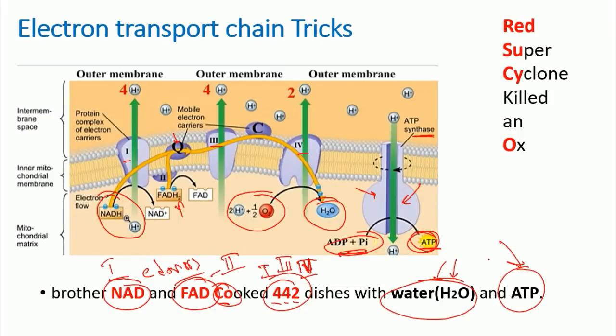Now the second thing you need to know is all about the names of these four separate components, these four separate complexes. So what are the names of the complexes? That's all about this: 'Red super cyclone killed an ox.' This sentence again: Red super cyclone killed an ox.